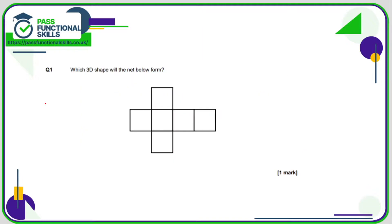Let's take a look at the nets questions. Question number one: which 3D shape will the net below form? Once you get practice you'll know straight away, but imagine you're doing some origami and making folds here, here, here, and here. If we imagine this is the front, this will be the top, this the bottom, this the left-hand side, this the right-hand side, and with a final fold here, this will be the back — and we will have a cube.